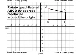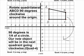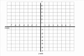We are going to take a quadrilateral and rotate it 90 degrees clockwise around the origin. Now the origin is simply where the x and the y-axis intersect, which is located at the coordinates zero comma zero.